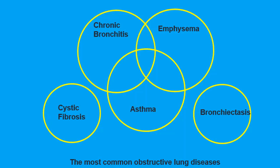The obstructive diseases we'll be talking about today are chronic bronchitis, emphysema, and asthma. There's a lot of stuff that shares commonalities between these, so you're going to see some overlap. That's why I want you to do that chart - to see the differences and what makes emphysema emphysema, what makes chronic bronchitis chronic bronchitis, and what makes asthma different from each of these.